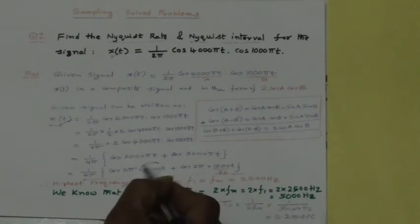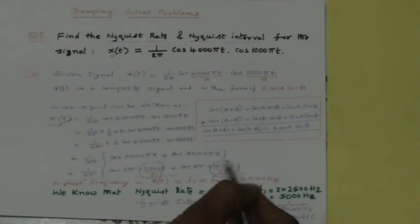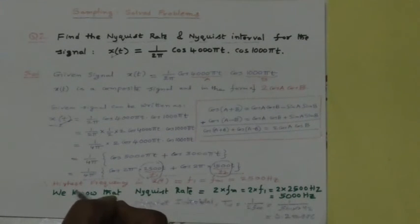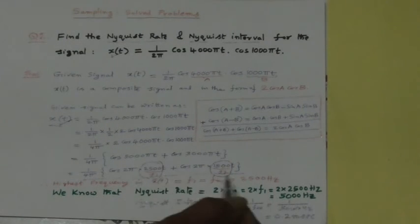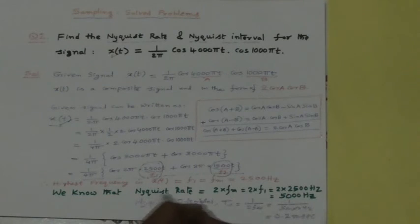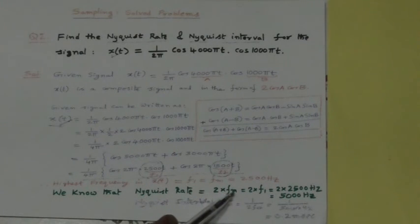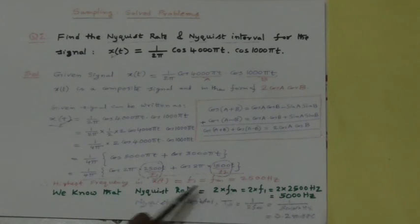Using the trigonometric product-to-sum formula to rewrite the signal, we find F1 = 2500 Hz and F2 = 1500 Hz. The highest frequency is F1 at 2500 Hz. The Nyquist rate, given by twice of Fm, gives a Nyquist rate of 5000 Hz.